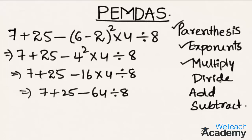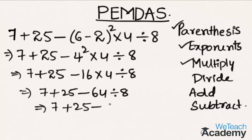Then coming to division — we have a division term in our expression. Dividing, we get 7 plus 25 minus 64 divided by 8, which is 8. So we get 7 plus 25 minus 8. Division is finished.